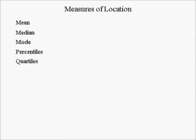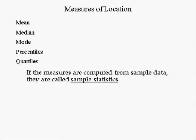In the first part of Chapter 3, we study several measures of location, which include the mean, median, mode, percentiles, and quartiles. If these measures are computed using sample data, they are called sample statistics. The daily presidential polls leading up to an election are an example of sample statistics, called the sample proportion.